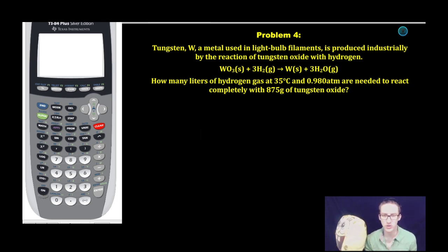We're finishing up strong here. Problem number four. It says tungsten, W, a metal used in light bulb filaments is produced industrially by the reaction of tungsten oxide with hydrogen. Light bulb. So excited to solve this problem.